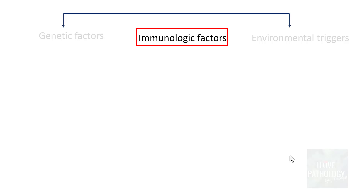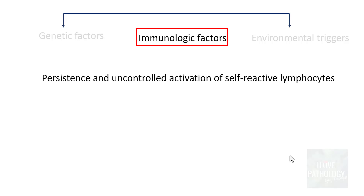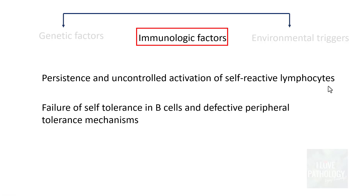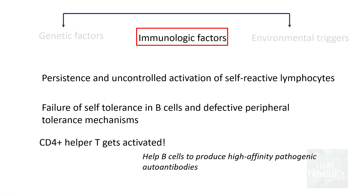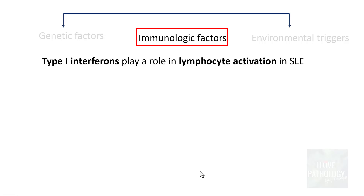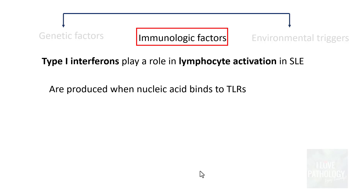Once these genetic defects are present, the immunologic factors come into play, where there is persistence and uncontrolled activation of self-reactive lymphocytes. Because of those genetic defects there is failure of self-tolerance in B cells, defective peripheral tolerance mechanisms, and CD4-positive helper T cells get activated, helping B cells produce lots of high-affinity pathogenic autoantibodies. Remember, type 1 interferon plays a major role in lymphocyte activation in SLE — these interferons are produced when nucleic acid binds to toll-like receptors.